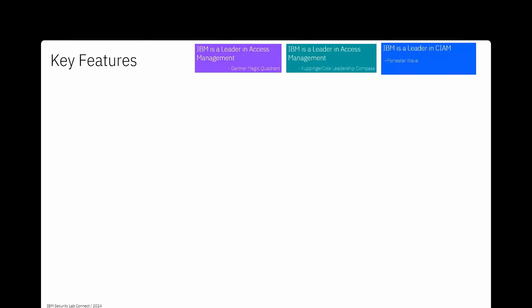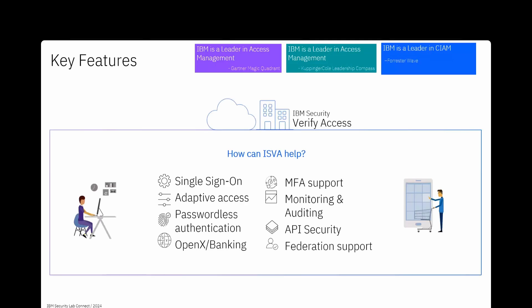IBM has been recognized as a leader in the latest Gartner Magic Quadrant for Access Management report. The key features of ISVA include single sign-on — you authenticate once and access all applications, whether SaaS or on-premise — and adaptive access, which moves beyond static predefined access policies.